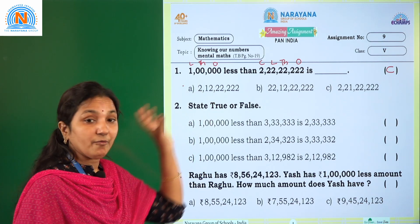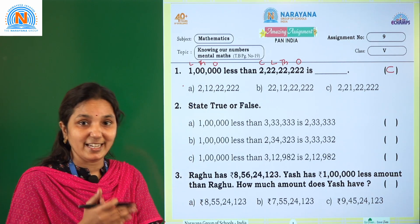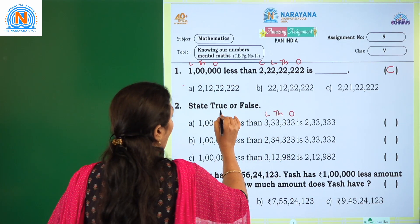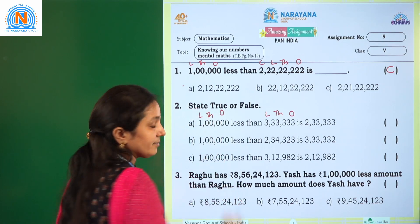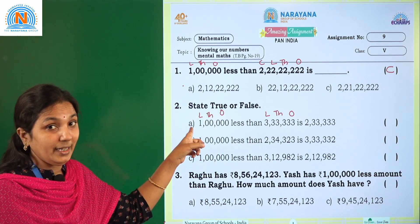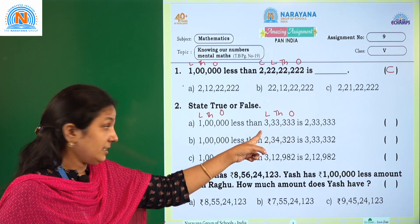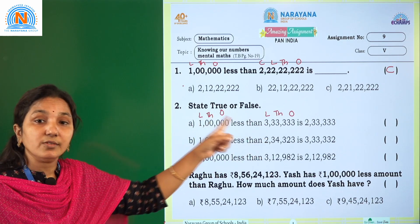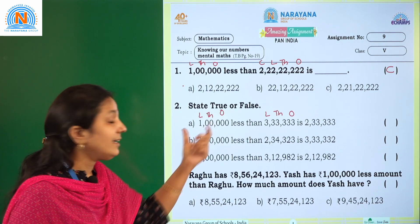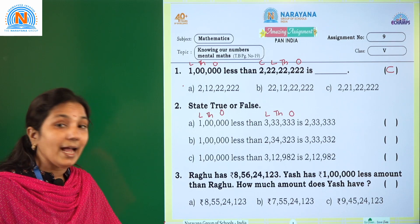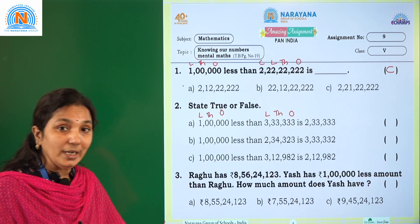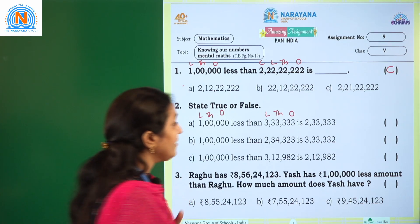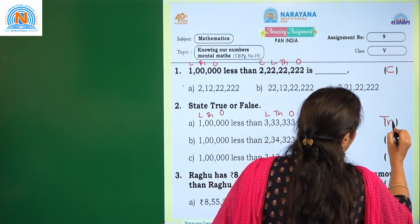From the first question you already learned how to subtract 1 lakh from a given number. So first identify the periods: ones, thousands, and lakhs. In 1 lakh, except in the lakhs place we have 1, remaining all are zeros. So we only need to subtract from the lakhs period. What is the lakhs digit here? 3. So 3 minus 1 equals 2. When 1 lakh is subtracted from 3,33,333 you get 2,33,333. That matches the given answer, so the statement is true.